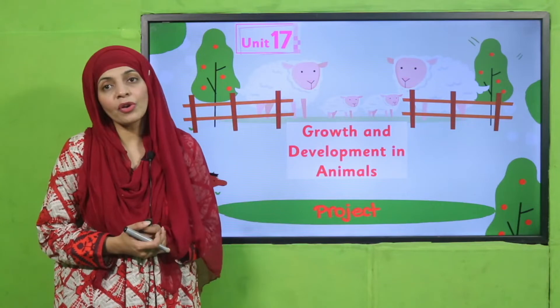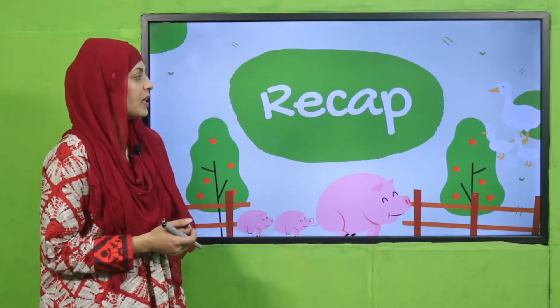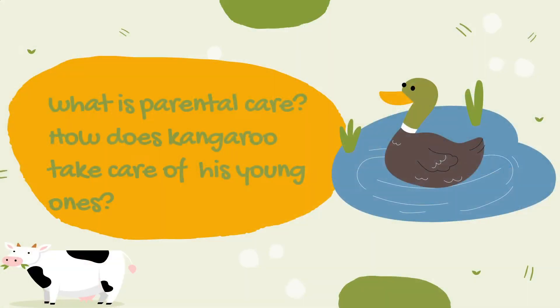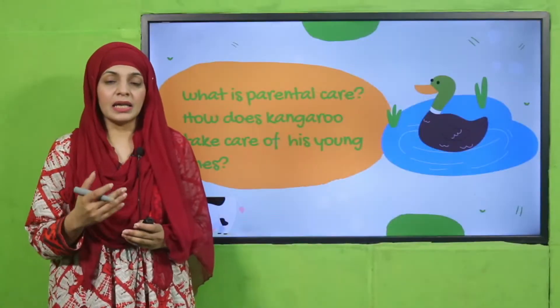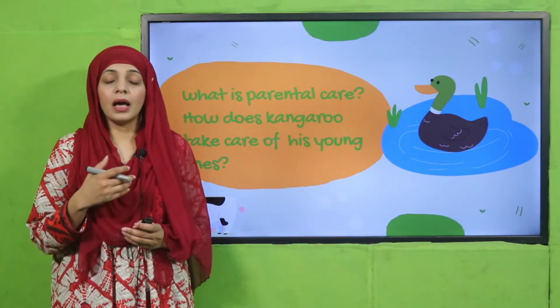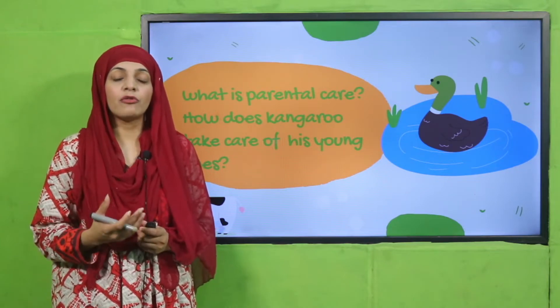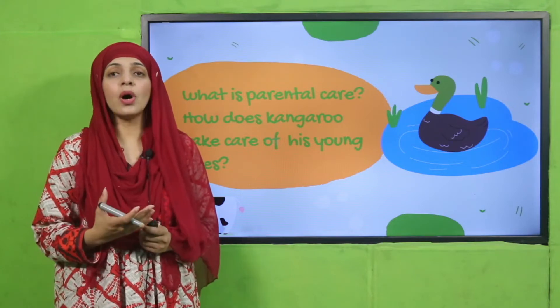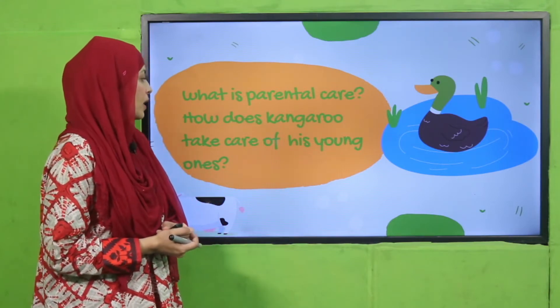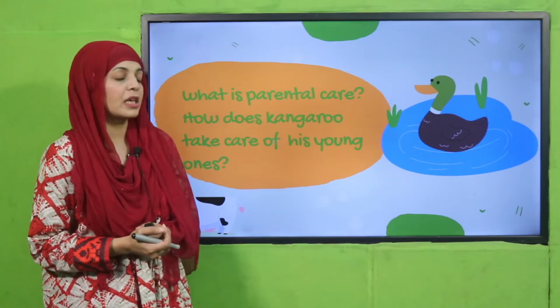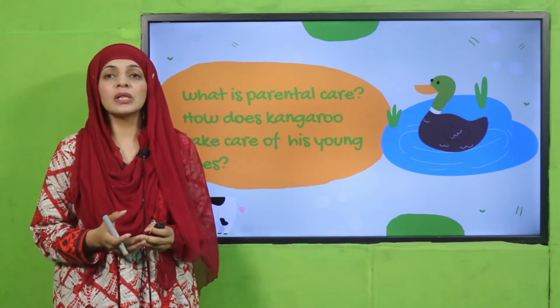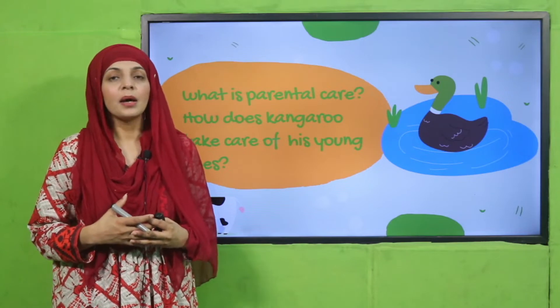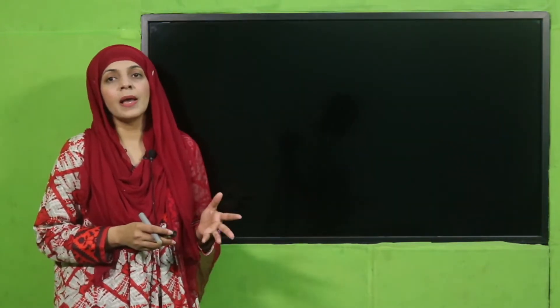Today we are going to make a project, but before moving on towards the project, let's quickly recap what we have done in the previous lecture. Listen to the question carefully: what is parental care? When parents feed, take care, and help the young ones in finding food, and teach them how to hunt, this is called parental care. How does a kangaroo take care of its young one? It keeps it inside its pouch — that is how it takes care of its young ones.